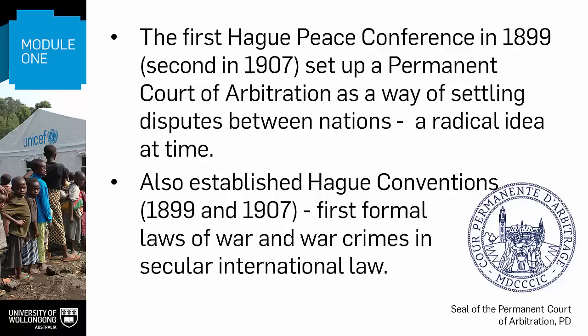The Hague Conference was focused on the issue of disarmament. It didn't make much progress in that area. However, it did set up a permanent court of arbitration as a way of settling disputes between nations. This was a fairly radical idea at the time, though it was contested by those who thought politics should and would retain its central role in sorting international disputes. The court is still around today and has 115 members, but taking cases to it is voluntary, and it dealt with very few cases until around 1990. Since then, the number of cases has increased, though details of the cases are only published if the parties agree, so its work remains a bit of a mystery.